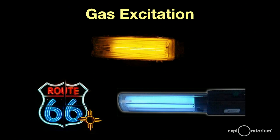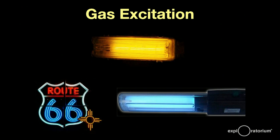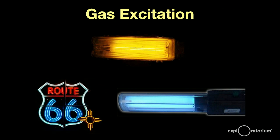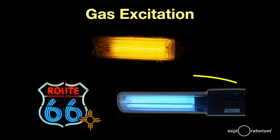Here you see three examples: a low-pressure sodium lamp, which gives off a very pure yellow light; a neon sign — by the way, only the red is actually neon, the rest of the colors are made with mercury; and finally, a mercury germicidal lamp with its beautiful baby blue color.